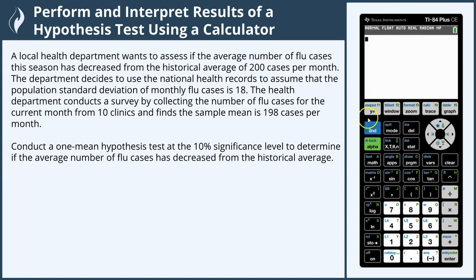Let's start by setting up our null hypothesis and our alternative hypothesis. Our null hypothesis, H naught, is that the population mean is still 200. Our alternative hypothesis is that the number of cases has decreased, so that mu is less than 200.